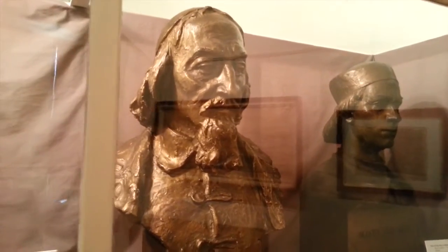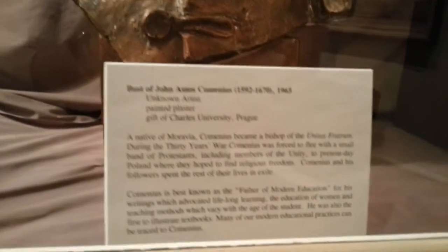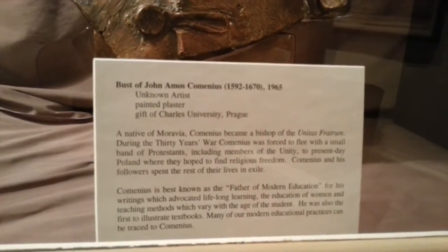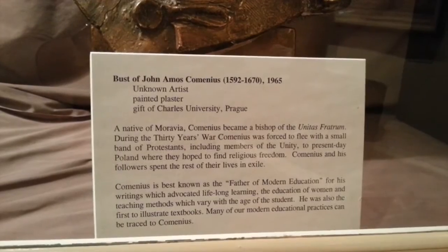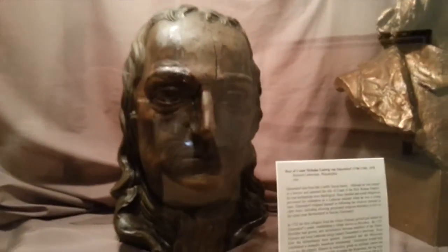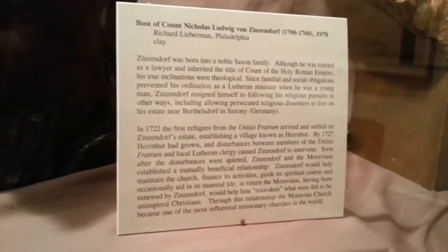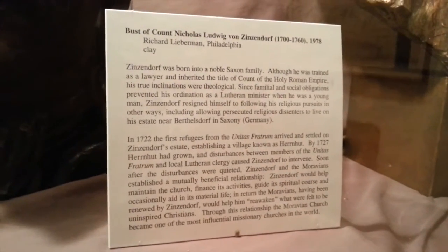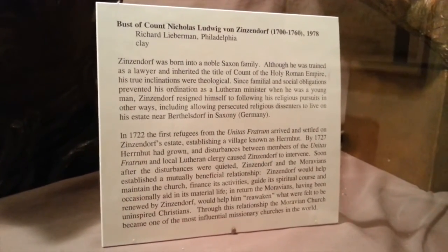Then we've got John Amos Comenius, father of modern education — he's the reason why we have pictures in our textbooks, and he was a bishop of the church, so he's really important. Then we've got Count Zinzendorf, and he is where we get lots and lots of history from the Moravian church.